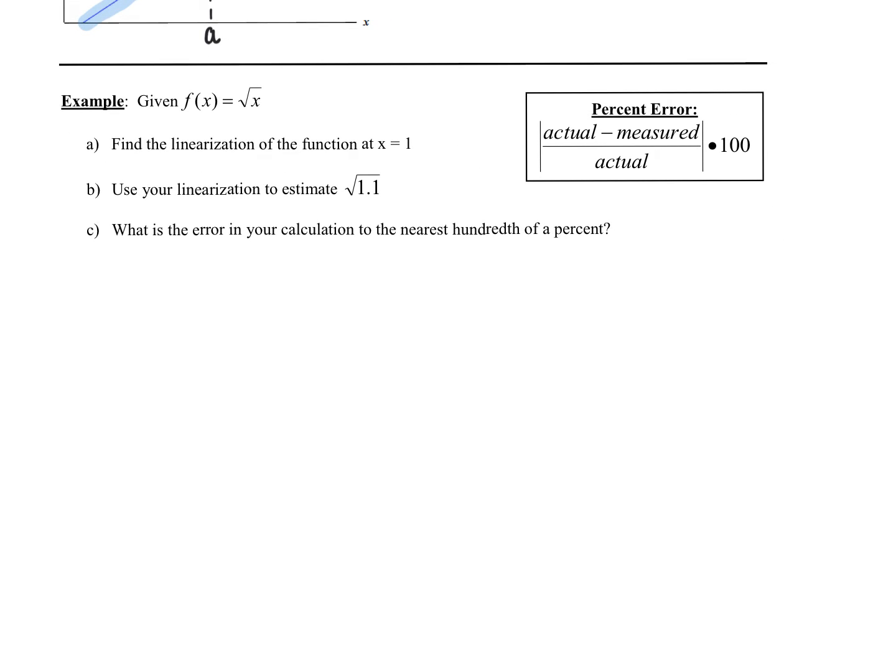So here's how it's going to work. Here's an example. Let's say I give you the function f(x) equals the square root of x and I'm asking you to find the linearization of the function at x equals 1. Basically what that means to do is I want you to find the equation of the tangent line at x equals 1. So when I'm saying linearization I'm meaning find the equation of the tangent line at x equals 1. So to do that we always have two things, right? An equation of a line we need a point and a slope. So I'm going to go ahead and label this part a.